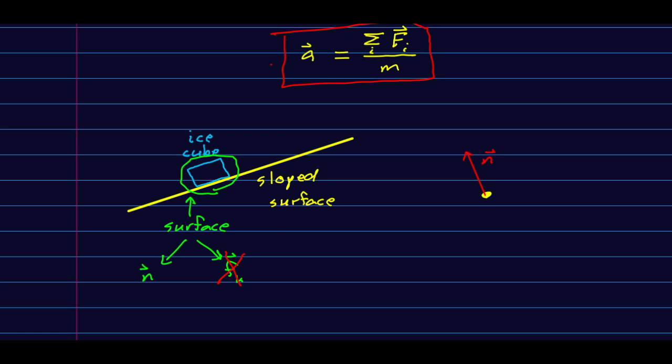And so what I would then have would be the normal force perpendicular to the surface like so. And then of course the long-range force, the weight being exerted on it by the earth, points straight down.